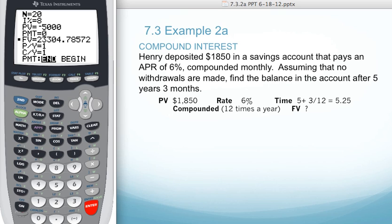In example 2A, we will look at compound interest using the TVM solver. Henry deposited $1,850 in a savings account that pays an APR of 6% compounded monthly. Assuming that no withdrawals are made, find the balance in the account after 5 years, 3 months.